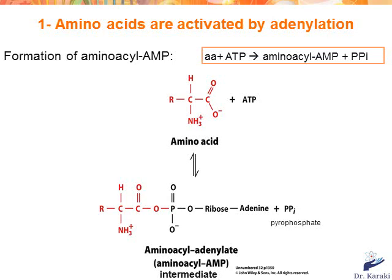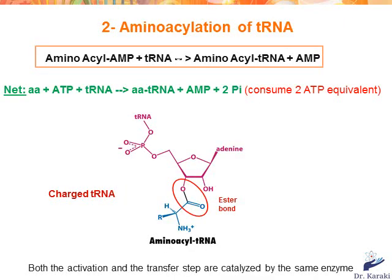The aminoacyl-AMP intermediate doesn't dissociate from the synthetase; rather, it stays bound to the active site of the enzyme. The second step is the transfer of the aminoacyl group of aminoacyl-AMP to a particular tRNA molecule on the 3'OH or 2'OH to form aminoacyl-tRNA. The sum of these activation and transfer steps is: amino acid + ATP + tRNA → aminoacyl-tRNA + AMP + 2 inorganic phosphates.